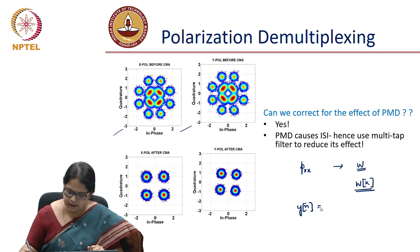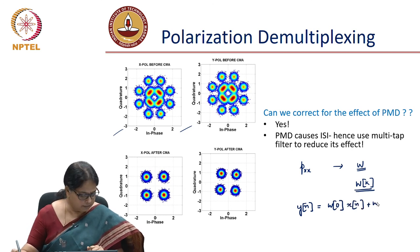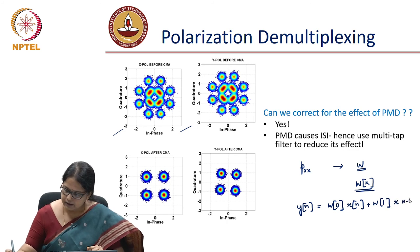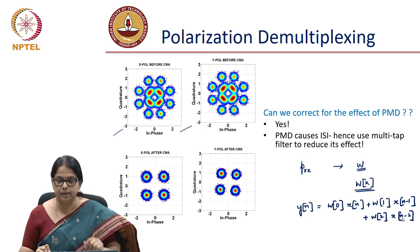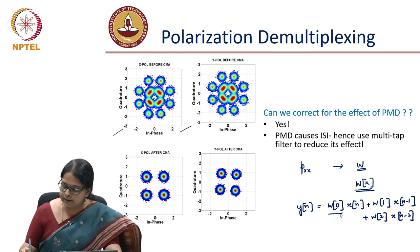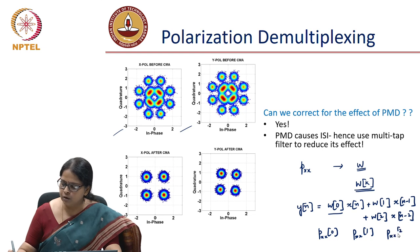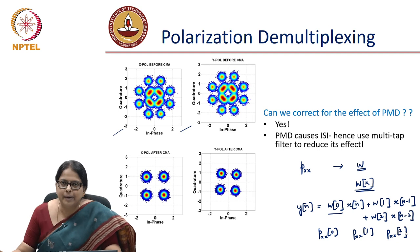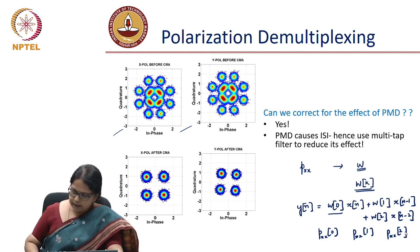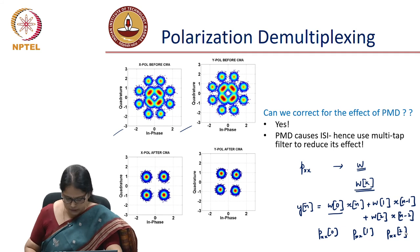You can design this as a multi-tap FIR filter and write the update equations for it. For example, if polarization mode dispersion causes information in a specific bit to spread into 3 neighboring bits, you would require a 3-tap filter: y(n) = w(0)*x(n) + w(1)*x(n-1) + w(2)*x(n-2). Instead of finding one value of Pxx, you find Pxx_0, Pxx_1, and Pxx_2 using similar update equations.